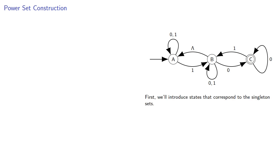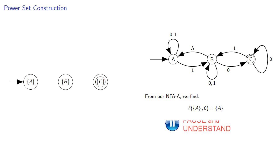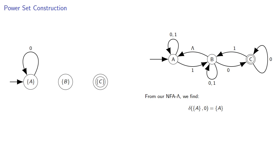First, we'll introduce states that correspond to the singleton sets. So we need to construct the transition function. If we're at state {A} and we receive a 0, then we go to {A}. Meanwhile, if we're at {A} and receive a 1, we go to the set {A, B}.